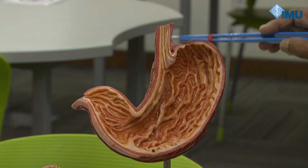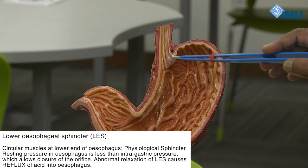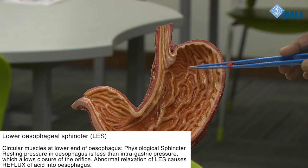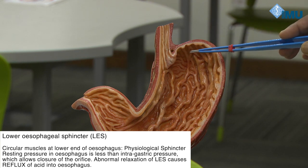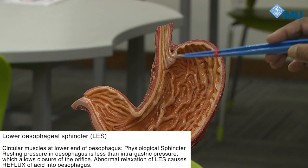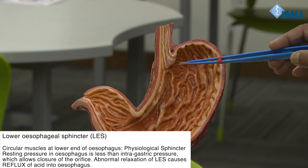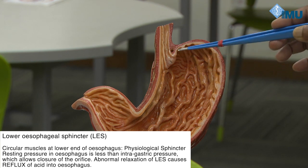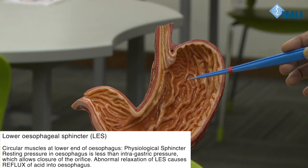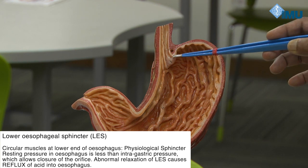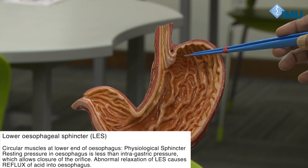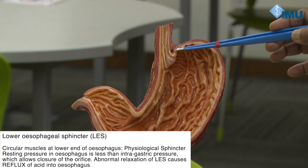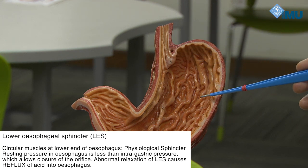The lower esophageal sphincter is not an anatomical sphincter. The intraesophageal pressure is less and the intragastric pressure is more, and there is the cardiac notch. This angulation allows the lower esophageal sphincter to remain closed by the difference in pressure between intragastric and intraesophageal pressure. If due to any reason this pressure difference is altered, this physiological sphincter does not work and acid can go inside the esophagus, causing burning of the esophageal mucosa — that is called reflux esophagitis.